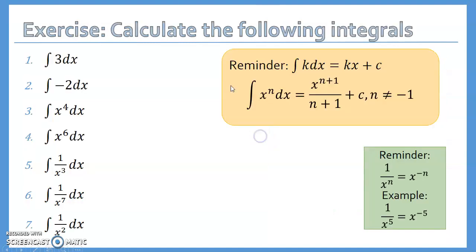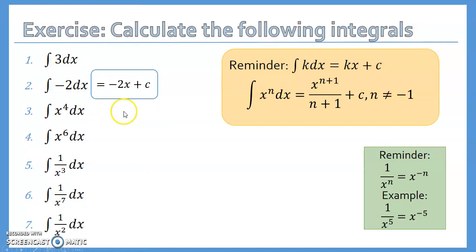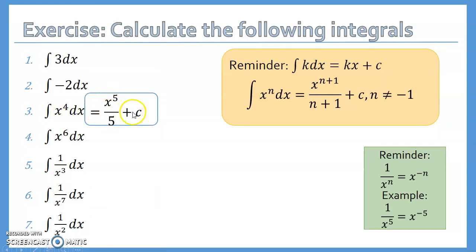Let's do some exercises. Pause the video and try exercises 1 to 4 yourself. The rules are shown as a reminder. First, ∫3 dx: since 3 is a constant, the answer is 3x + C. Second, ∫(−2) dx = −2x + C. Third, ∫x⁴ dx: add 1 to the power to get 5, divide by 5, giving x⁵/5 + C — don't forget + C. Fourth, ∫x⁶ dx = x⁷/7 + C since we add 1 to the power and divide by the new power.